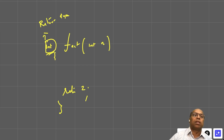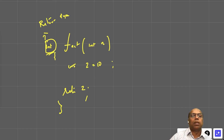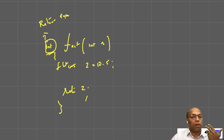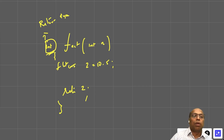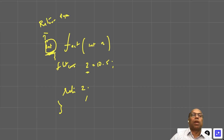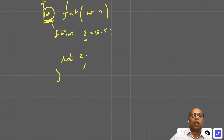Now, if I write float z equal to 10.5, but the return type is integer — when you call the function, an integer register is created. So even though z is float and holds 10.5, only 10 will be stored, because the register type is determined by the return type, not by z's type.